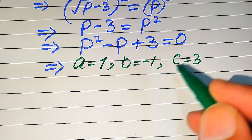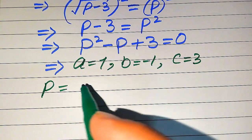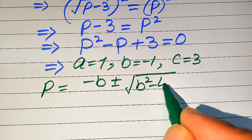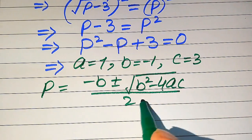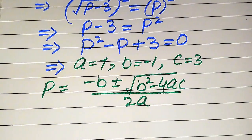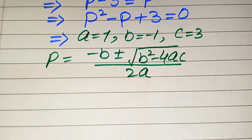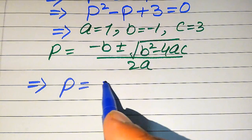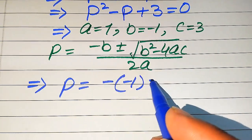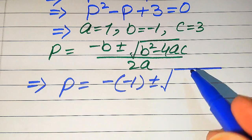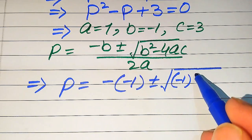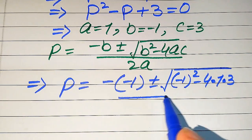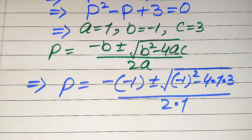The quadratic formula is P = (−b ± √(b² − 4ac)) / (2a). Substituting the values: b = −1, so we get (−(−1) ± √((−1)² − 4·1·3)) / (2·1).